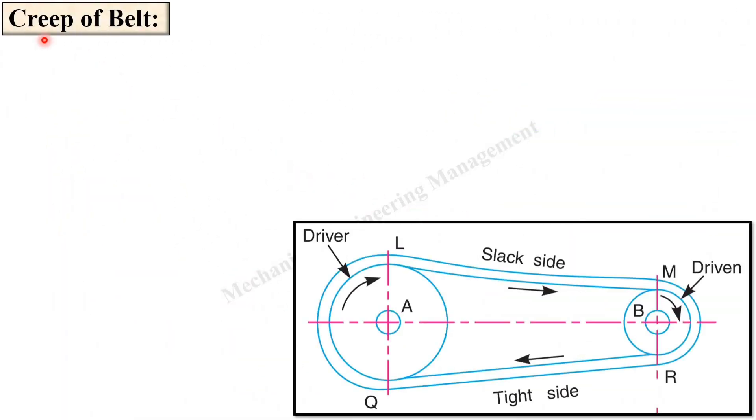Now let us see first of all the creep of belt by considering this figure. Here again you can see this is the driver, this is the driven shaft and the driver is rotating in the clockwise direction so it will be the tight side.